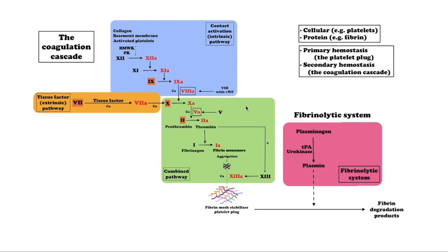In the final common pathway, prothrombin is converted to thrombin. When factor 10 is activated by either the intrinsic or extrinsic pathways, it activates prothrombin — also called factor 2 — and converts it into thrombin using factor 5 and calcium. Thrombin then cleaves fibrinogen into fibrin, which forms the mesh that binds to and strengthens the platelet plug, finishing coagulation and thus hemostasis.